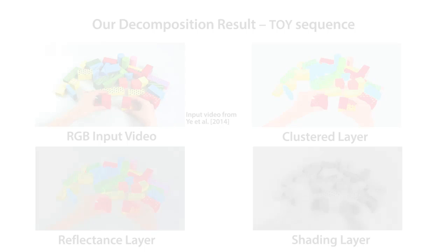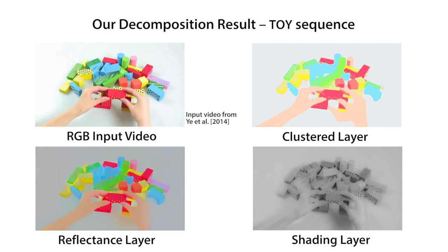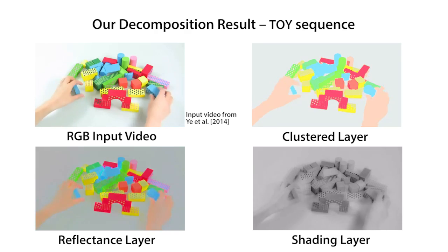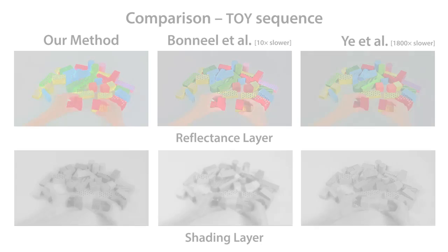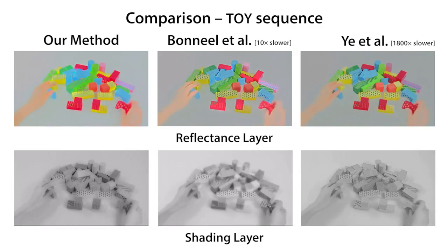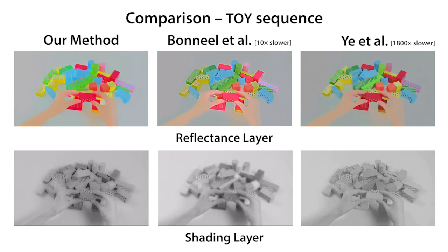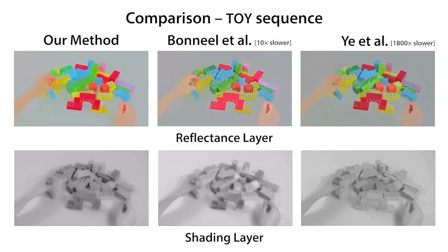We compare our method against current state-of-the-art techniques. Our method performs a consistent decomposition of the toy sequence and also generates a clustered version of the scene. Observe the consistent reflectance of the blue toy blocks in our decomposition. Reflectance from other methods erroneously contains a lot of shading compared to our method.